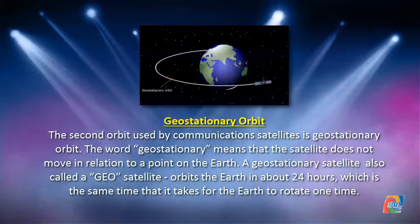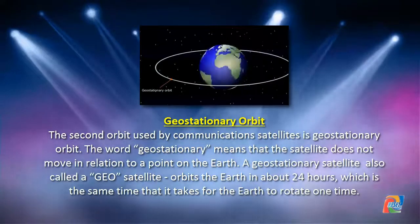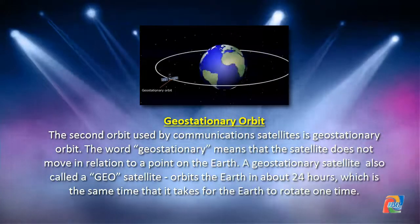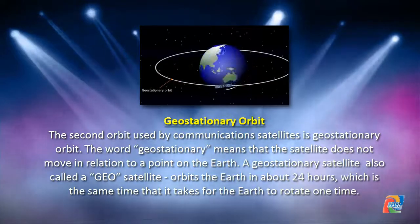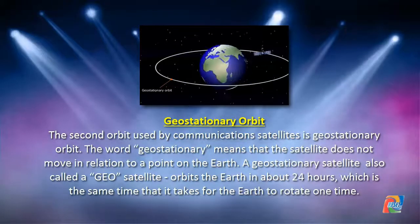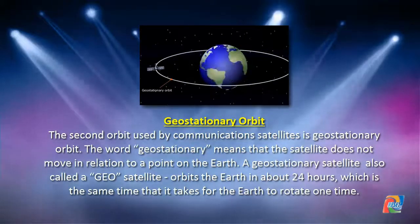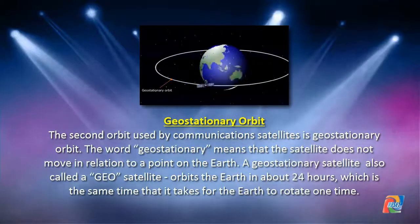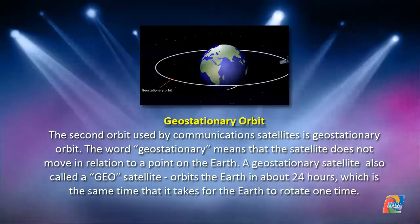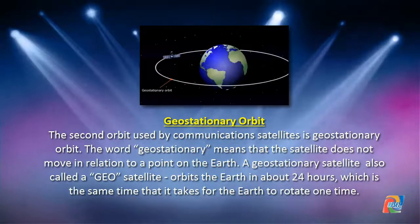Geostationary orbit is the second orbit used by communication satellites. The word geostationary means that the satellite does not move in relation to a point on the earth.